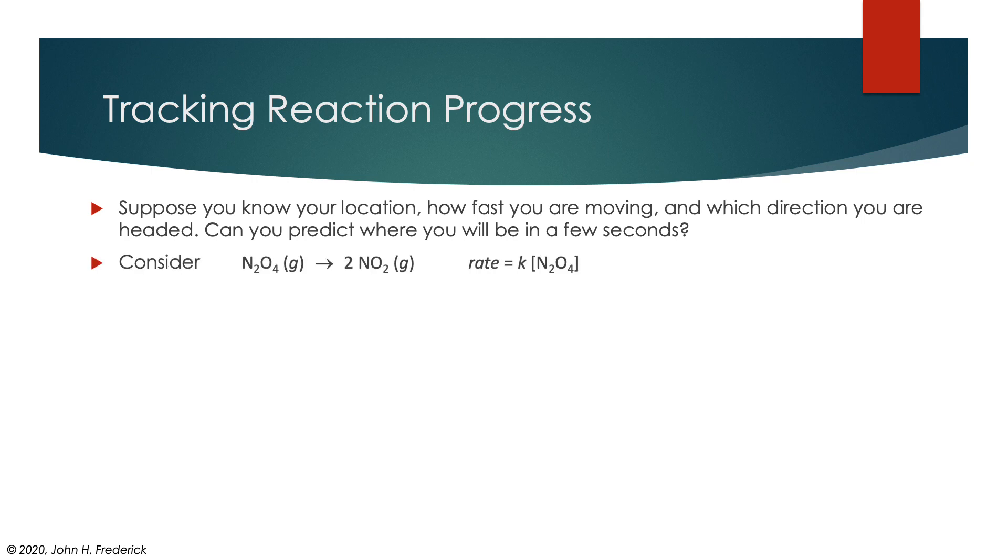Let's consider what that looks like for a reaction. Here's again our favorite reaction, N₂O₄ going to 2NO₂. The rate law in this case we're going to suppose is a first order rate law, so the rate is equal to the constant k times the concentration of N₂O₄. If we know what the concentration of N₂O₄ is at some time zero, using a subscript here to indicate the time, then we know that the rate at that time is just going to be k times that concentration.